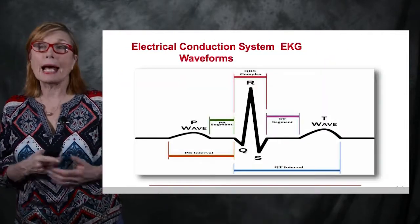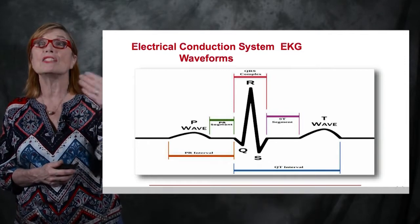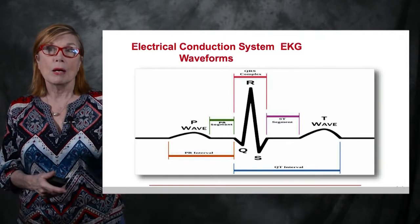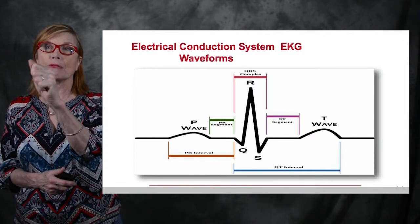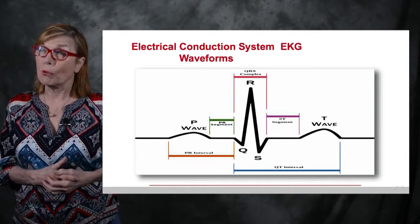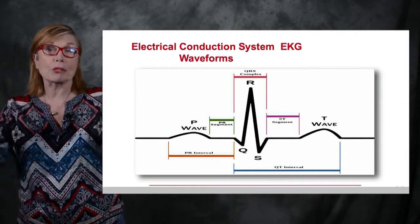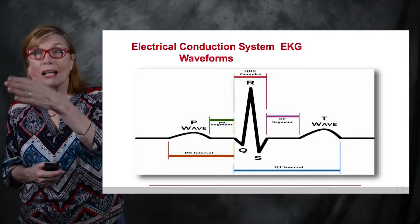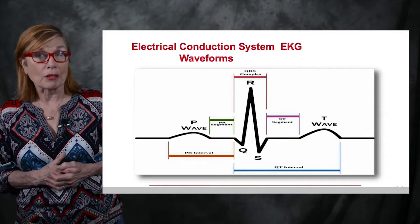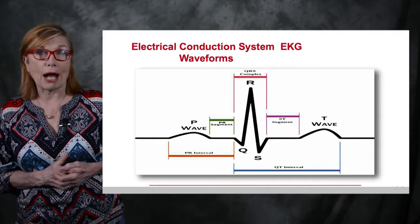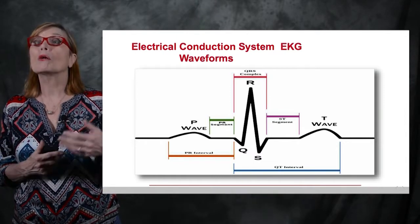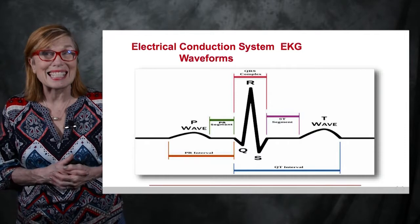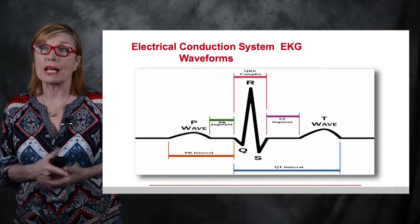Looking at an EKG: the P wave is the visualization of conduction through the atria, and after the P wave is a short segment known as the PR segment — during which the atria contract. Then comes the QRS, which relays electrical information through the ventricular conduction pathways: common bundle, bundle of His, Purkinje fibers. The ST segment follows as electrical rest, during which actual ventricular contraction occurs. So: P wave then atrial contraction during PR segment; QRS then ventricular contraction during ST segment; and then T wave as electrical repolarization.